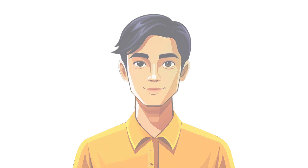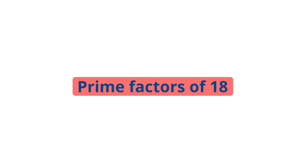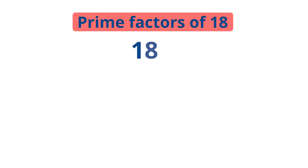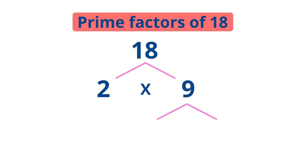What are prime factors? Prime factors are the factors of a number that are prime numbers. For example, we can find the prime factors of 18. 18 can be factored into 2 times 9, and 9 can be factored further into 3 times 3. So the prime factors of 18 are 2 times 3 times 3.